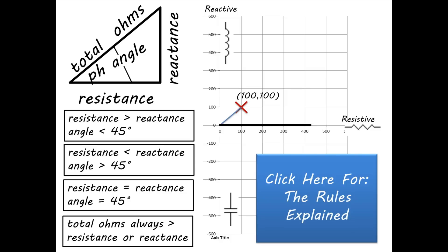The problem had a 100 ohm resistor in series with a 100 ohm inductor. So you put 100 ohms on the horizontal side of the triangle for the resistor, and 100 ohms on the vertical side of the triangle for the inductor. Then remember the rules.